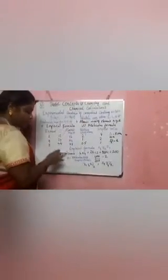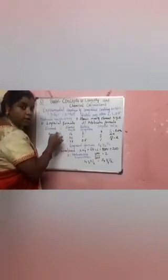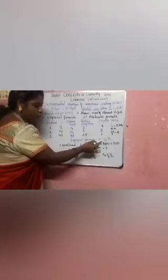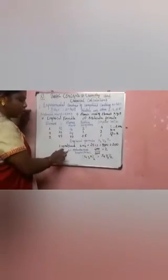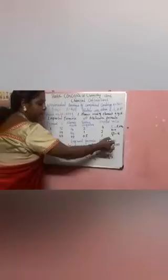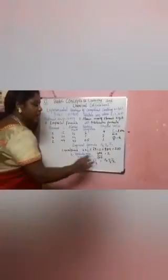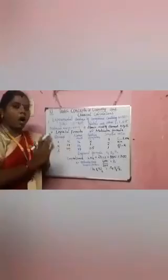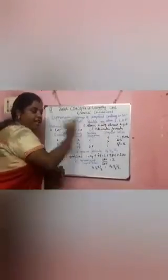Now find the empirical formula mass: (16 × 4) + (24 × 2) + (88 × 1) = 64 + 48 + 88 = 200. The molecular mass of the compound is given as 400. So n = 400 / 200 = 2. Substituting into the empirical formula X₄Y₂Z₁ multiplied by 2 gives the molecular formula: X₈Y₄Z₂. This completes the calculation of molecular formula from the empirical formula using the value of n.